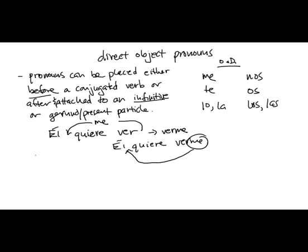What about, he wants to see us. El quiere ver. You could either say, el nos quiere ver. Or you could say, el quiere vernos. Not both, but one or the other. Okay. He wants to see us.